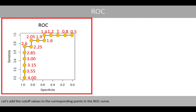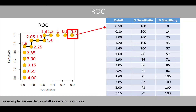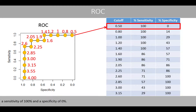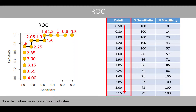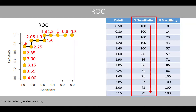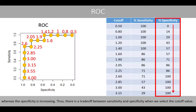Adding the cutoff values to the corresponding points on the ROC curve, we see that a cutoff of 0.5 gives 100% sensitivity and 0% specificity, while a cutoff of 1.6 gives 86% sensitivity and 57% specificity. Note that as we increase the cutoff value, sensitivity decreases whereas specificity increases. Thus, there is a tradeoff between sensitivity and specificity when selecting the cutoff value.